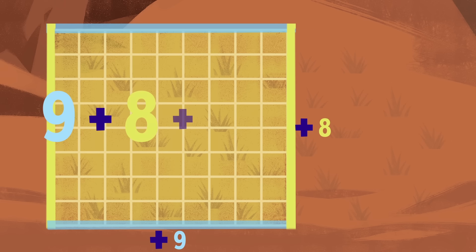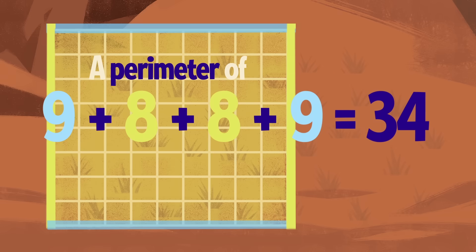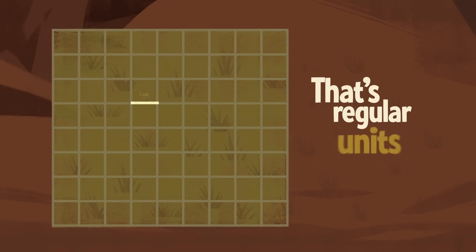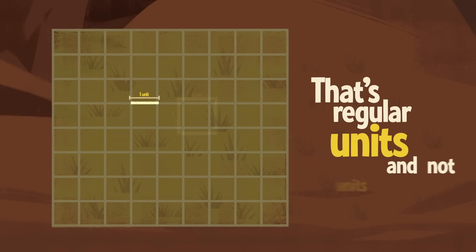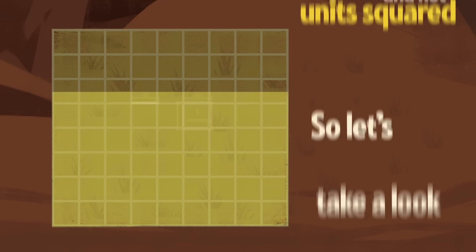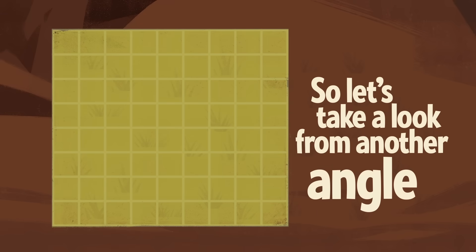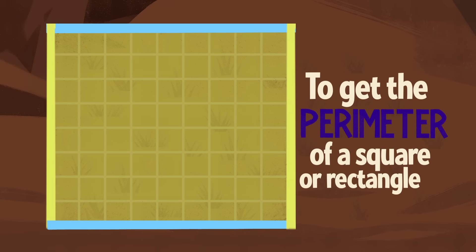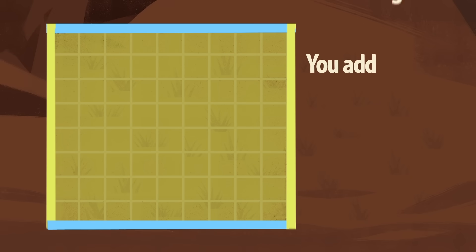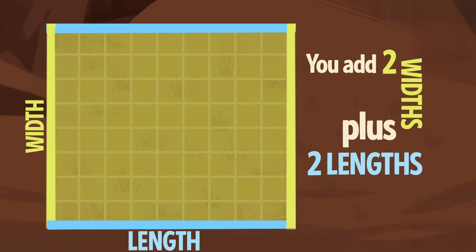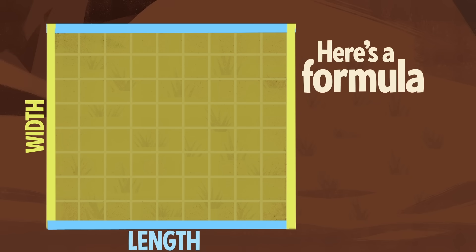How do you get it? Just add up the length of the sides: 9 plus 8 plus 8 plus 9 is a perimeter of 34 feet. And that's regular units, not square units. Let's take a look from another angle.